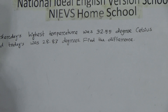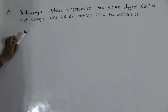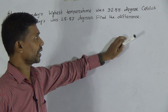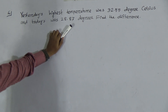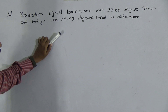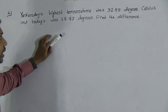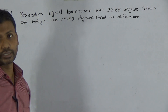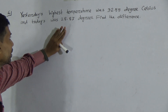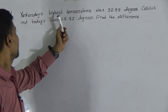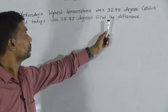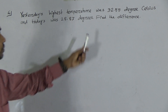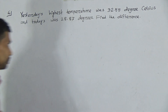Now first, read the question: Yesterday's highest temperature was 32.55 degrees Celsius, and today's temperature was 28.87 degrees Celsius. Find the difference. Students, notice here — yesterday's temperature was 32.55 degrees Celsius and today's temperature was 28.87 degrees Celsius. Observe that yesterday's temperature was bigger, so we have to subtract 28.87 from 32.55. The question says find the difference, which means you have to do subtraction.